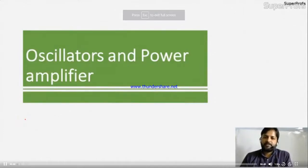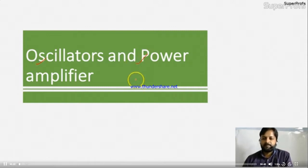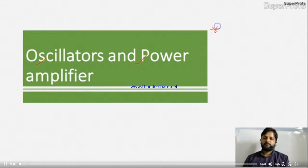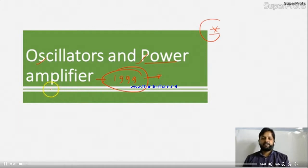We started with diode circuits, then BJT and FET, and in the third unit we covered operational amplifiers. This is the last unit in which we will discuss oscillators and power amplifiers. Before starting, let me tell you one thing: these two topics are not so important for the GATE exam. From power amplifier, the last question we got was in 1999.